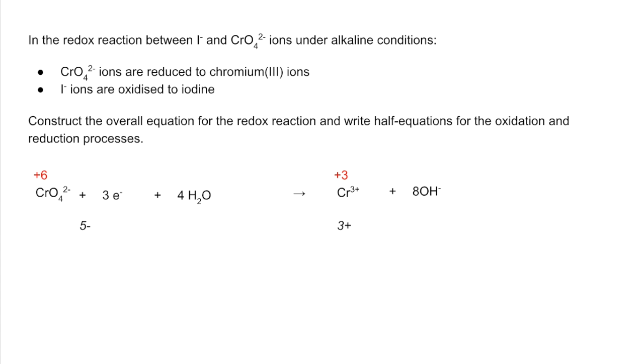The iodide to iodine is very simple. We need 2 I minuses to balance the atoms and we need 2 electrons to balance the charge.